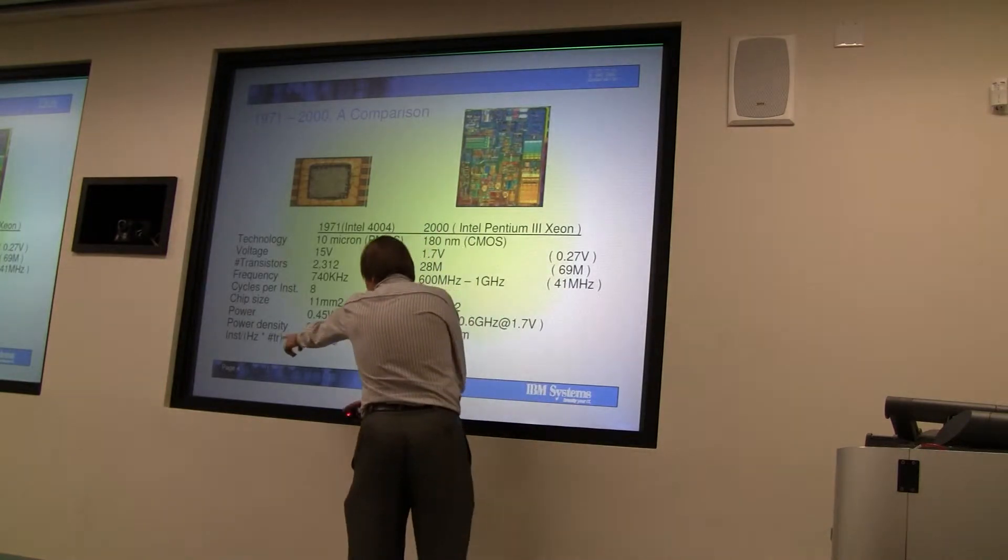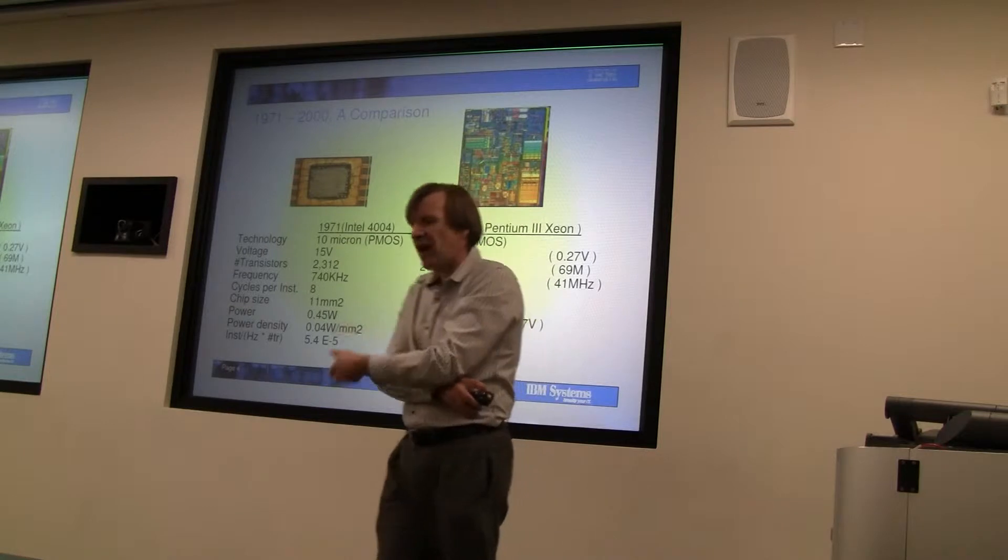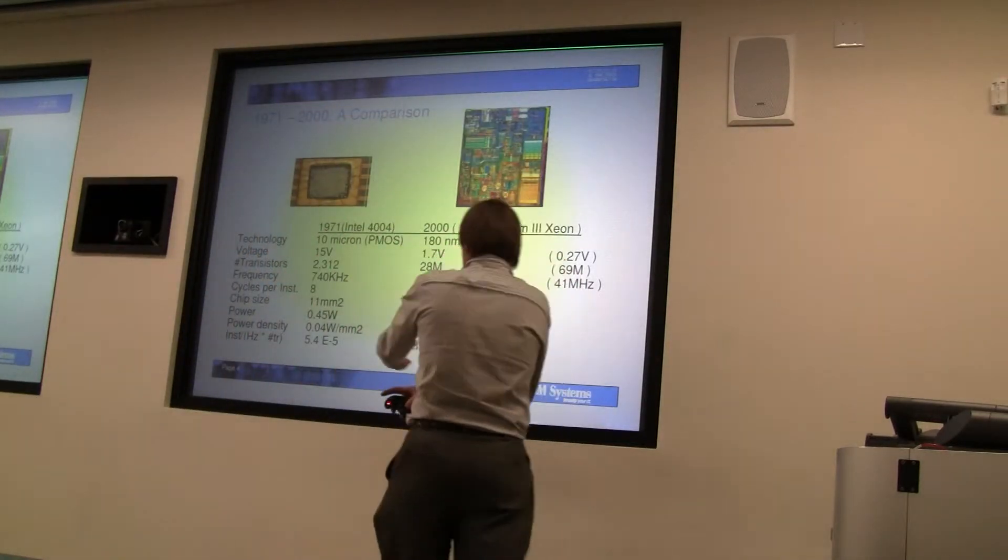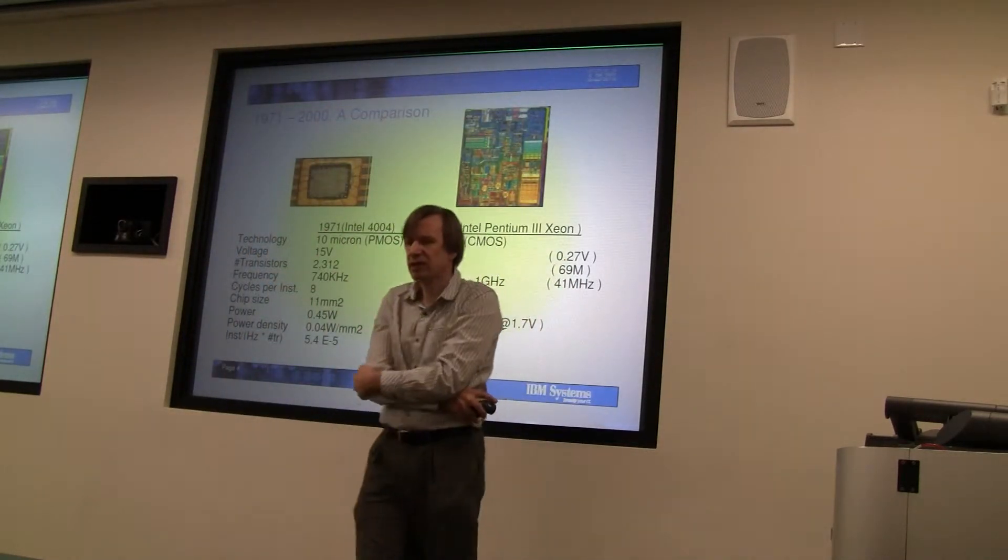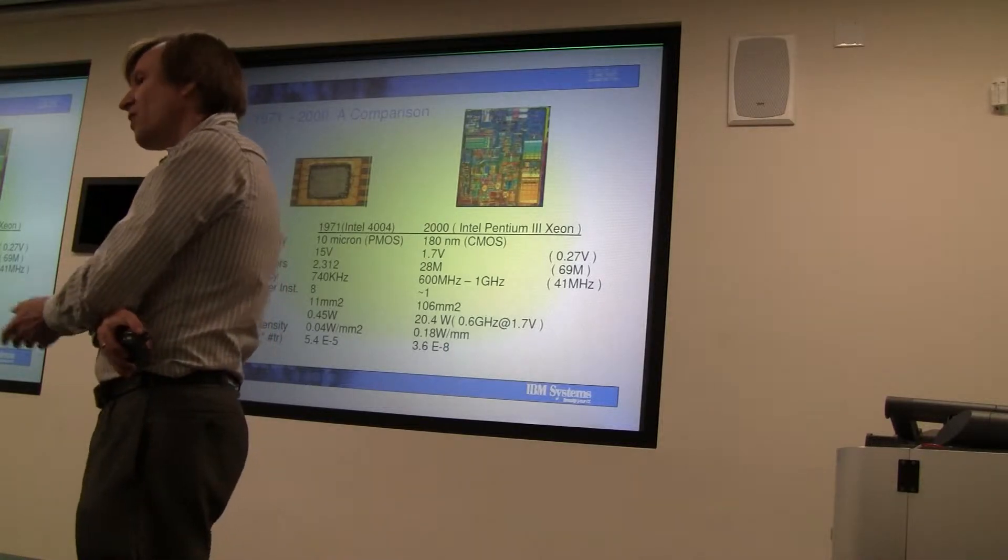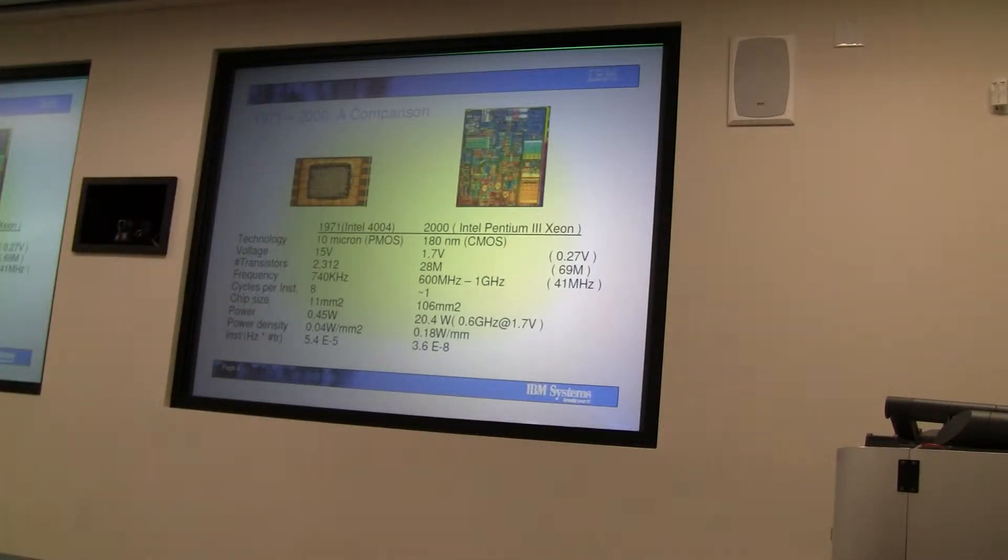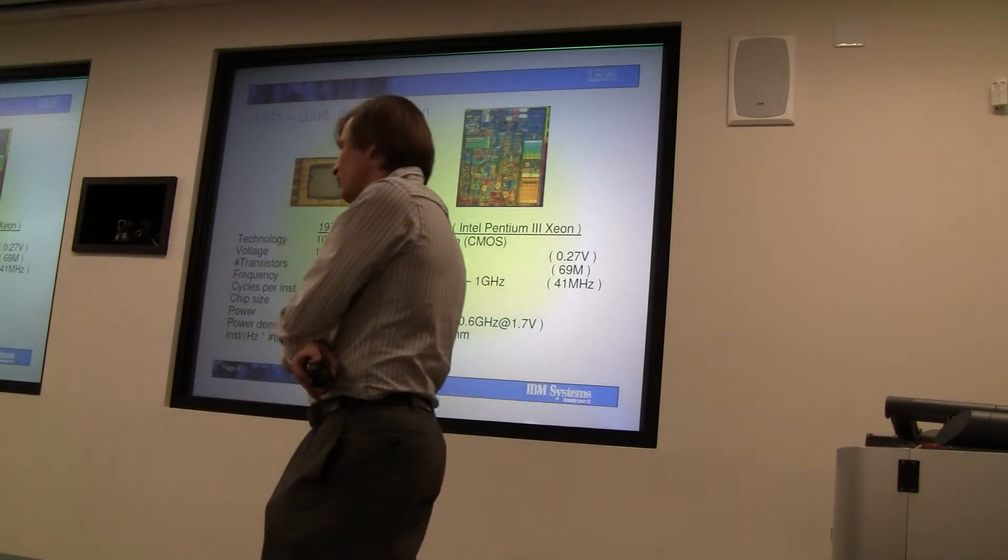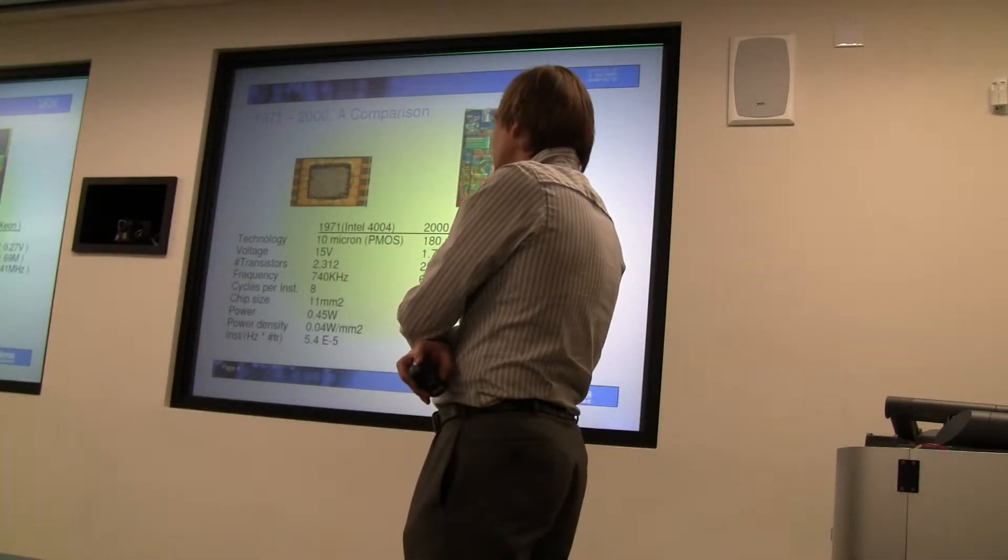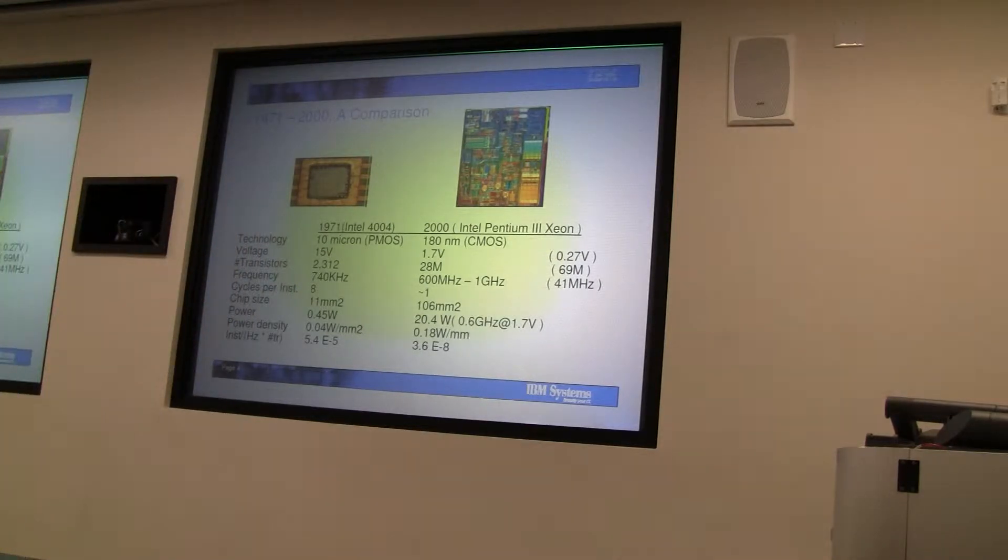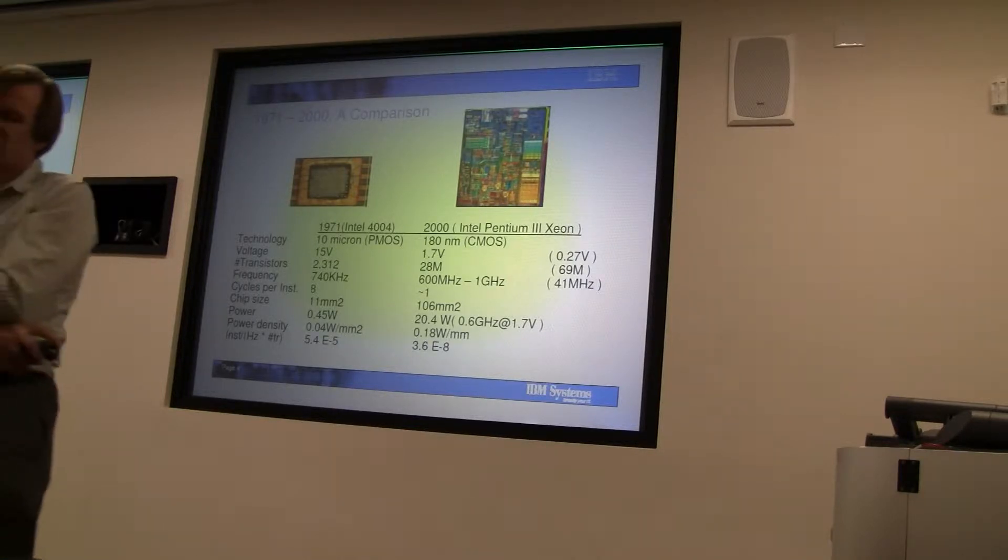What you see is that on that metric - I equate the number of instructions issued with the performance, approximately - there's roughly three orders of magnitude decline over this period in that metric of efficiency. Keep this in mind: it doesn't mean we weren't doing the right thing during this period. Programmability is incredibly important and it was clearly a very successful path.